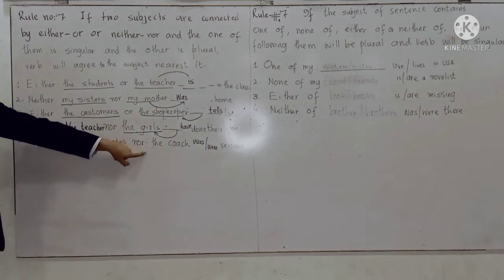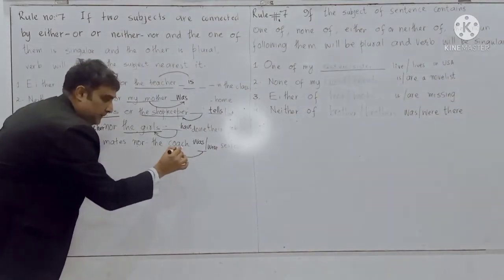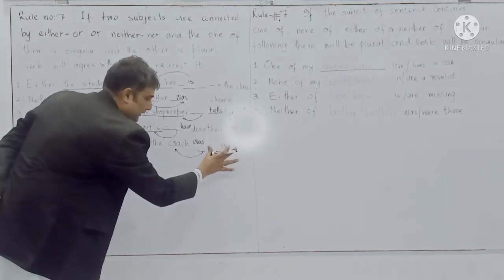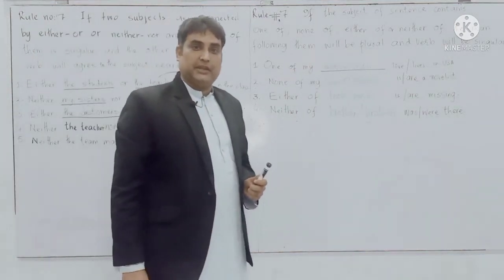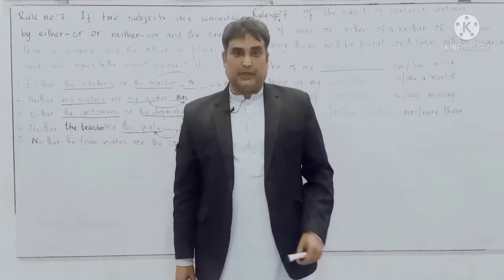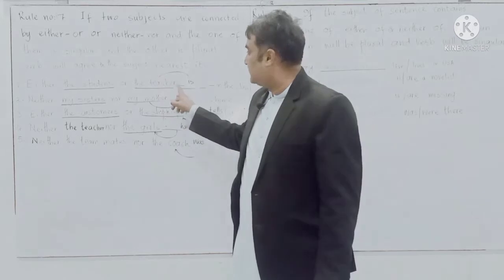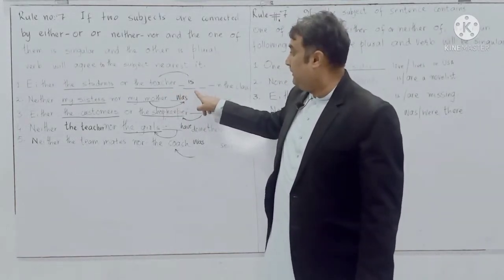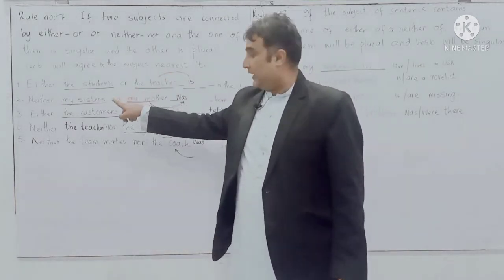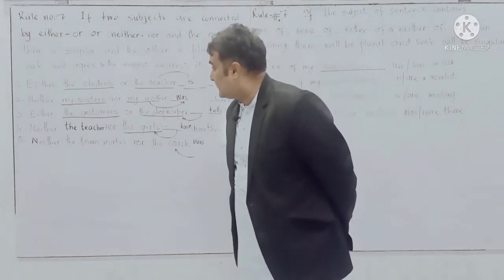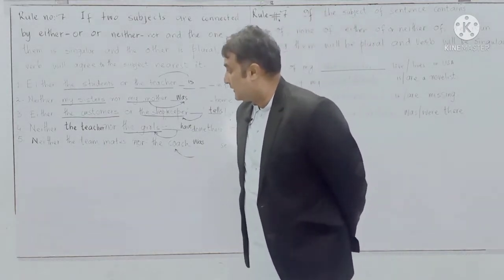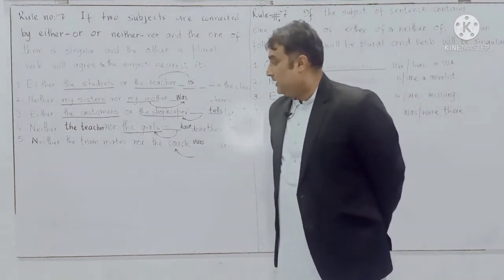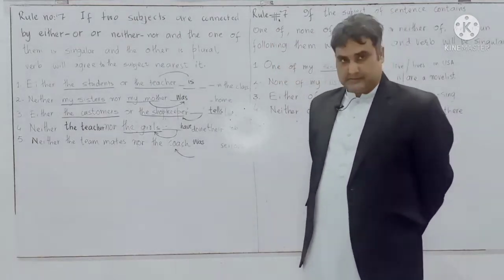Look at the next example: 'Neither the teammates nor the coach.' The subject nearest to the verb is 'the coach,' which is singular, so the verb will be singular: 'Neither the teammates nor the coach was serious.' To summarize rule number seven: when two subjects are connected by either/or or neither/nor and one is singular and the other is plural, the verb agrees with the nearest subject. Examples: 'Either the students or the teacher is in the class.' 'Neither my sisters nor my mother was there.' 'Either the customers or the shopkeeper tells.' 'Neither the teacher nor the girls have done their job.' 'Neither the teammates nor the coach was serious.'